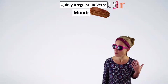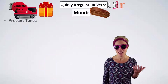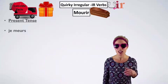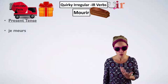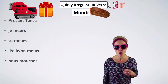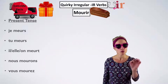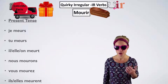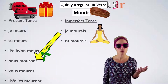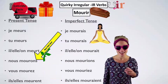Finally, we have a quirky IR verb all by itself in a group of its own: Mourir — to die. Let's conjugate it in the present indicative: je meurs — it goes to -EU. There aren't many EU verbs: je veux, je peux, and then je meurs. Tu meurs. Il/elle/on meurt. Nous mourons — back to the infinitive spelling because nous and vous are very square. Vous mourez. Ils/elles meurent. For the imperfect, we need the nous stem: je mourais, tu mourais, il/elle/on mourait, nous mourions, vous mouriez, ils/elles mouraient.